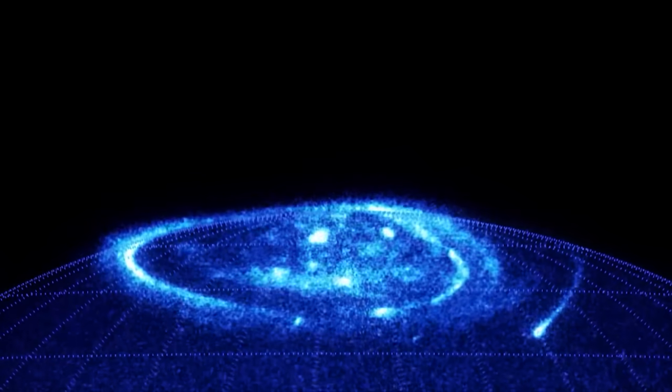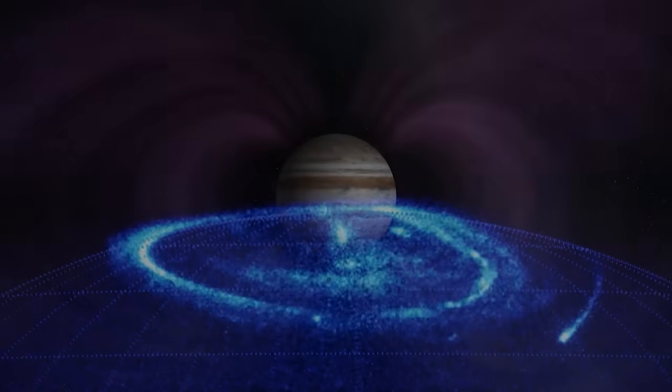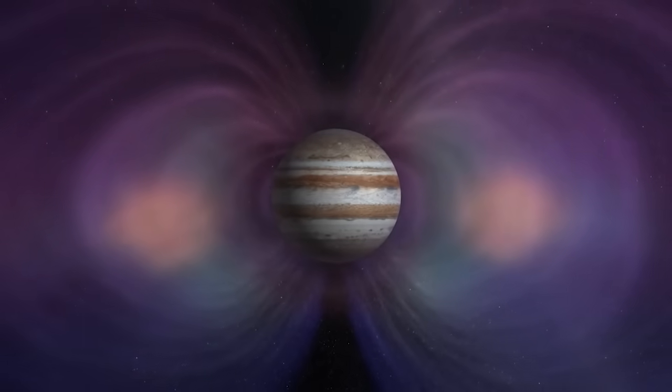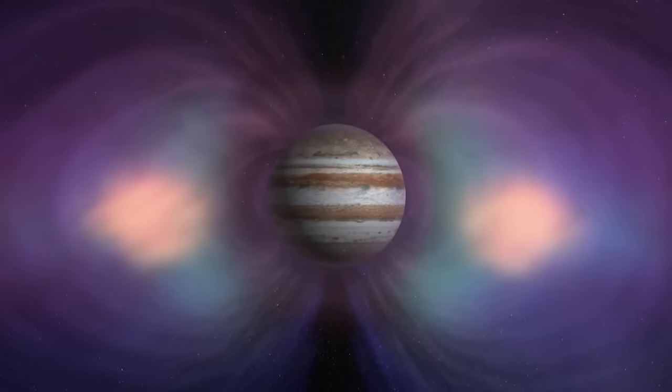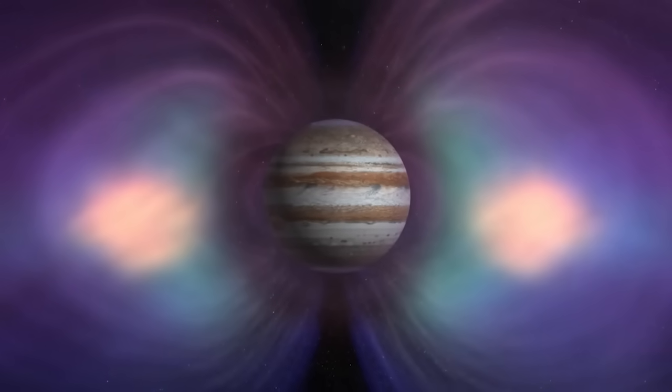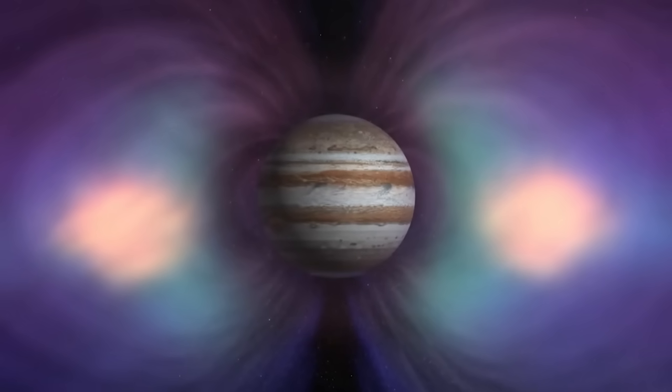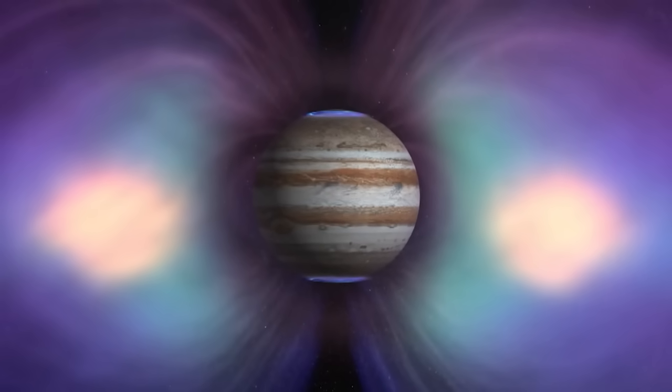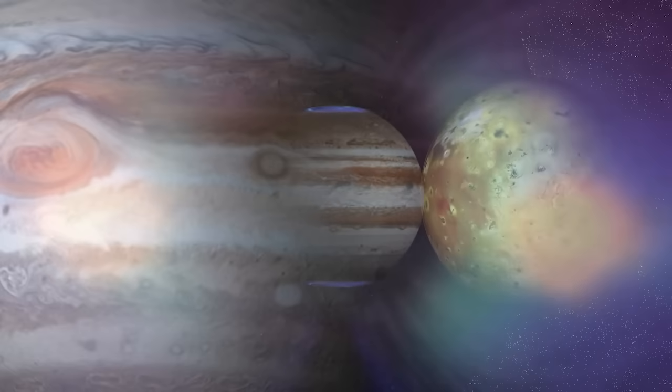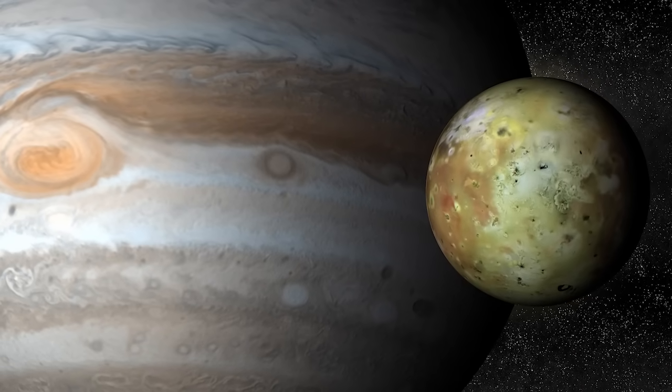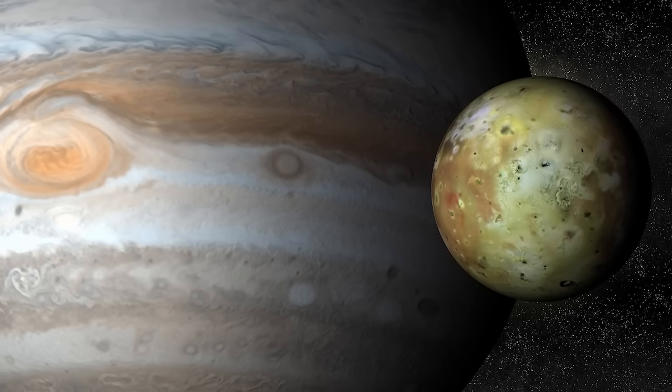The magnetic field of Jupiter guides the charged particles coming from the magnetosphere towards the polar regions. Jupiter's auroras are permanent, unlike the ones you can see at the poles on Earth. The most energetic ones are born from the projection of matter from the Moon Io.